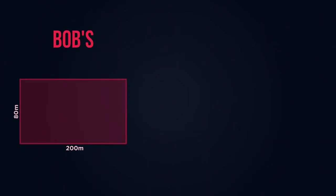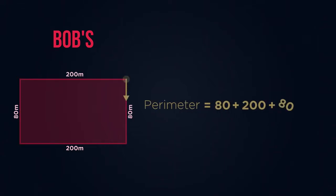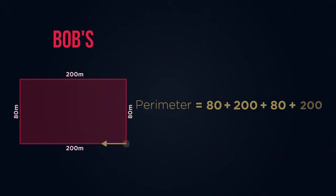Let's start by finding the perimeter of Bob's simple rectangular farm. Choose a starting point — I'm going to start in this corner and start adding up the sides: 80 metres, add 200 metres, add 80 metres, add 200 metres, which added together gives a perimeter of 560 metres.